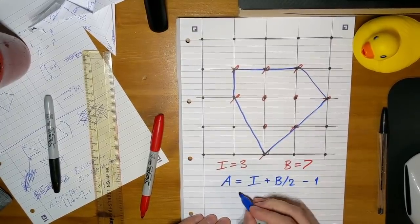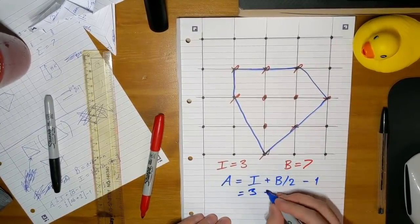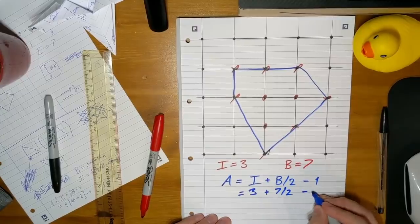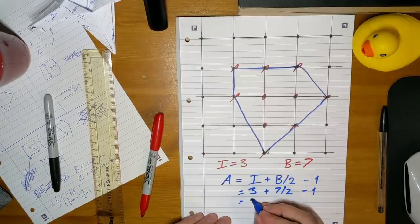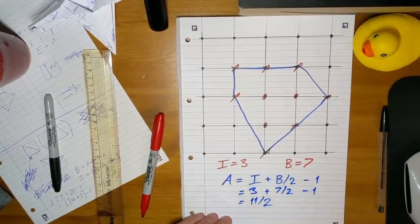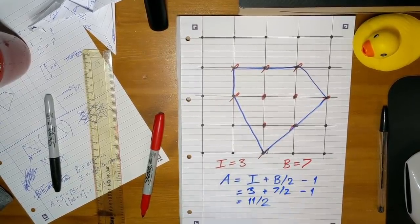So in this case, we've got i is three, b over two is seven over two, minus one. What's that? Eleven and a half, eleven over two. And that really is the area of that shape.